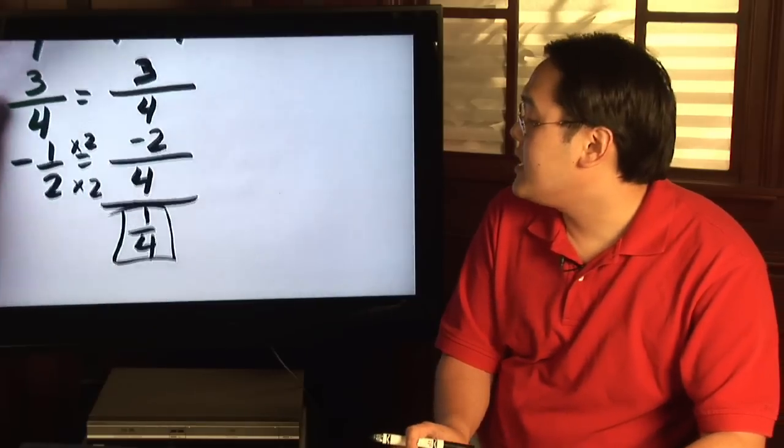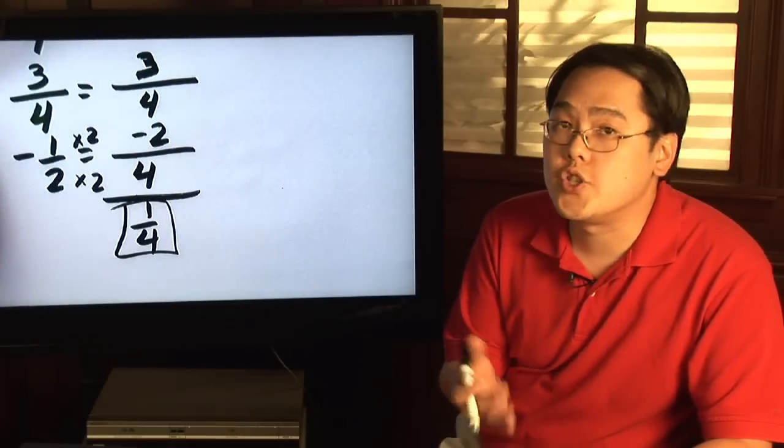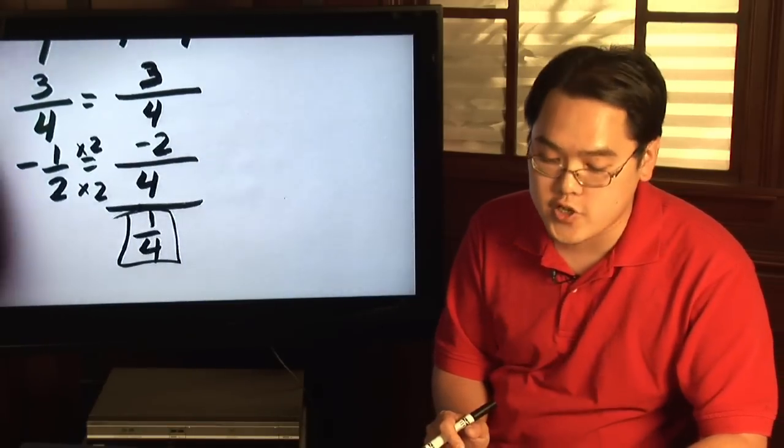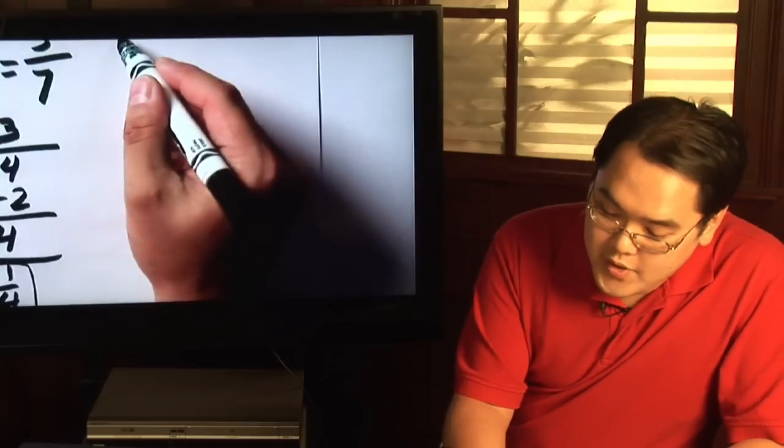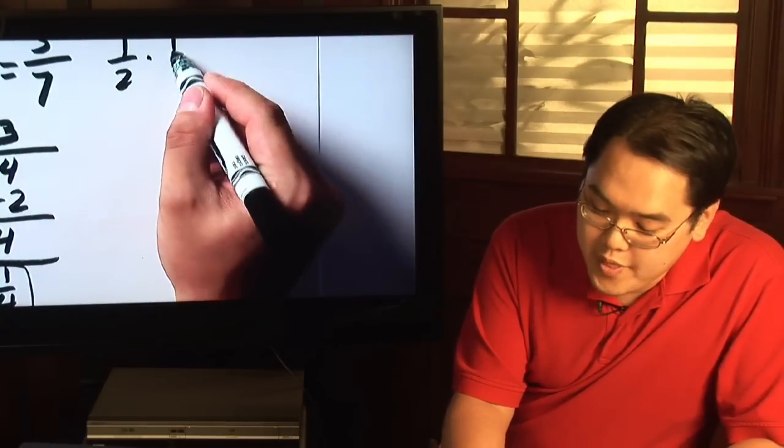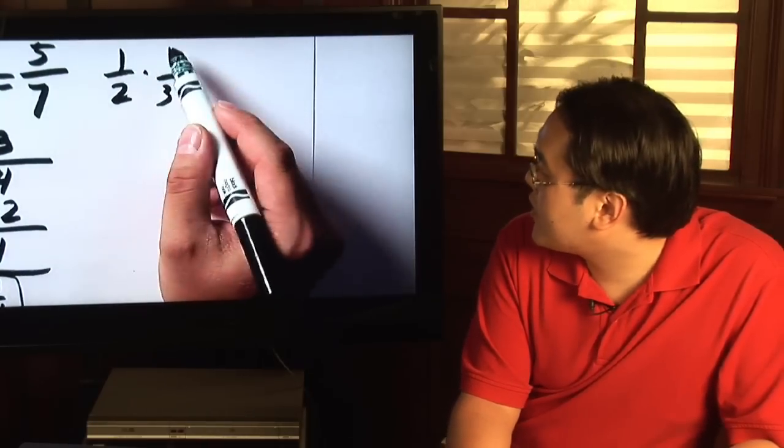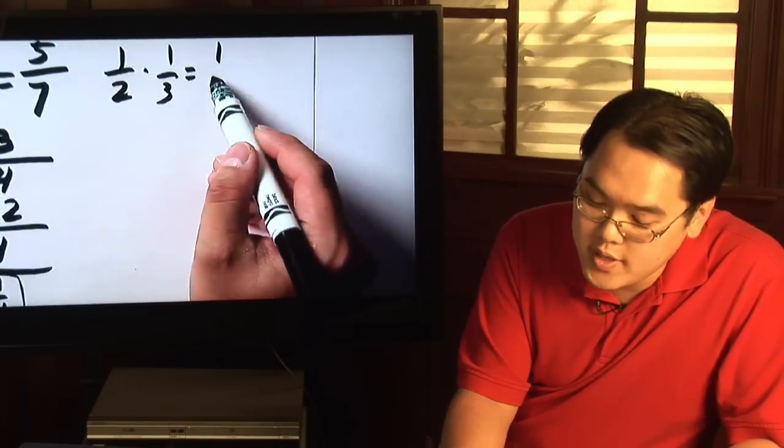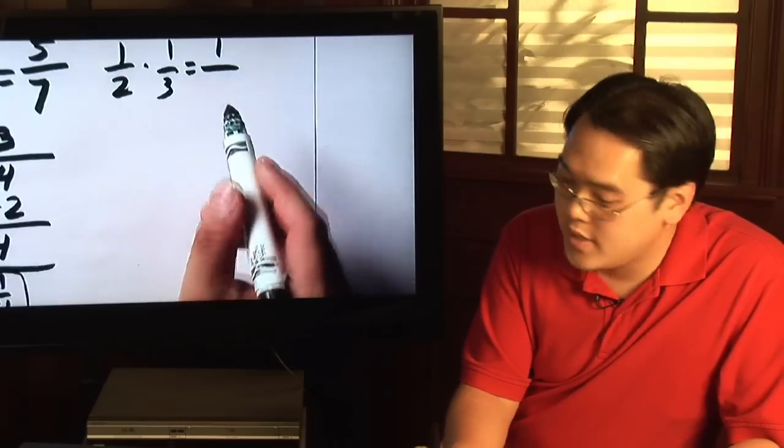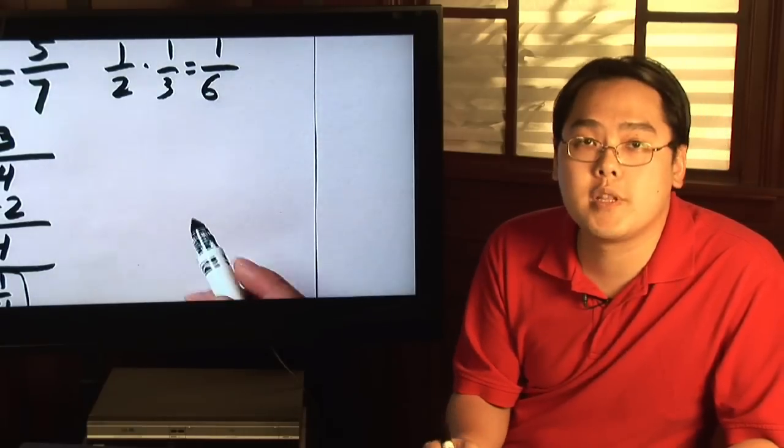The idea of least common denominators do not apply to multiplication or division. If you have one half times one third, all you have to do is multiply across. Multiply the top numbers: one times one is one, two times three is six. Multiplication is probably the most straightforward.